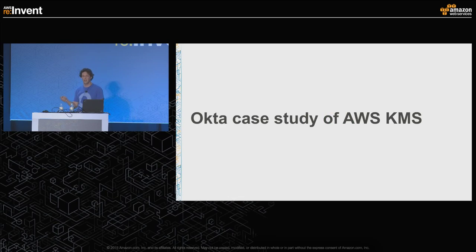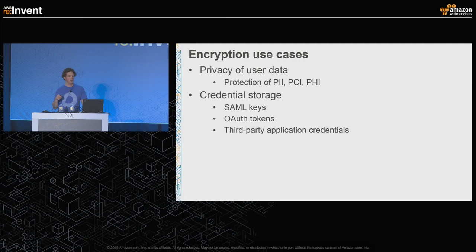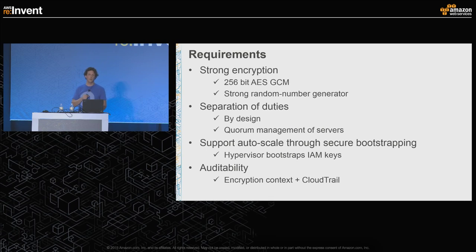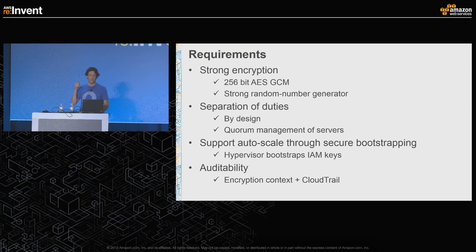Now let's dig into how we actually went through the process of rolling out and evaluating the KMS offering from Amazon. At Okta our encryption use cases are twofold: we have customer data we want to keep private — like PII, PCI, and PHI — and we store user credentials. These were our requirements, so let's look at how they matched up with what KMS offers. First, we wanted strong encryption, and KMS offers that with industry-standard 256-bit AES-GCM, plus hardware-enabled strong random number generation.